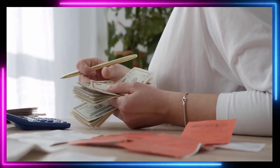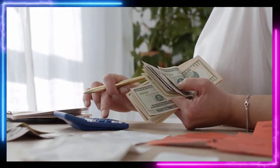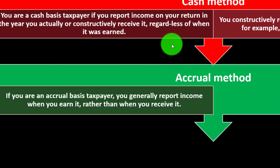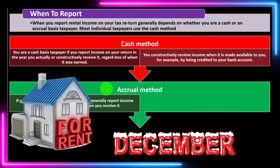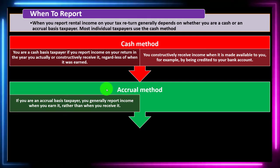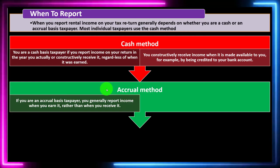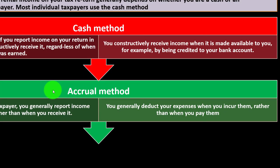The IRS will put limitations on how much you can manipulate when income is reported just by manipulating cash flow. Under the accrual method, if you are an accrual-based taxpayer, you generally report income when you earn it rather than when you receive it. If someone rented the property in December but didn't pay until January, on accrual basis the income is reported in December. You generally deduct expenses when you incur them rather than when you pay them.